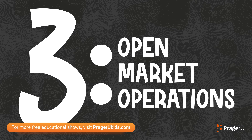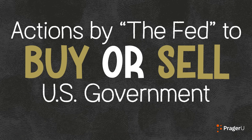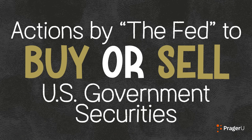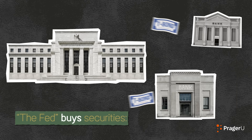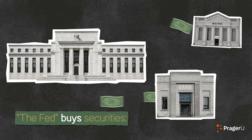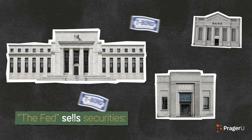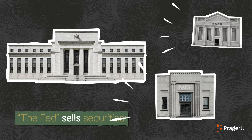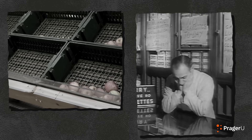Lastly, open market operations are actions by the Fed to buy or sell U.S. government securities, like Treasury bonds, in the open market. When the Fed buys securities, it increases the money in the banking system, which leads to lower interest rates, stimulating economic activity. On the flip side, selling securities reduces the money supply and raises interest rates, discouraging economic activity.